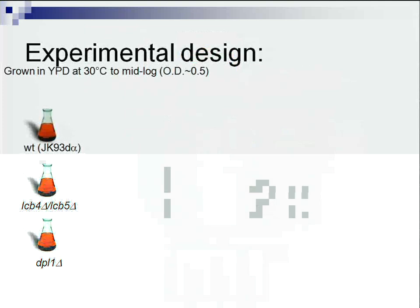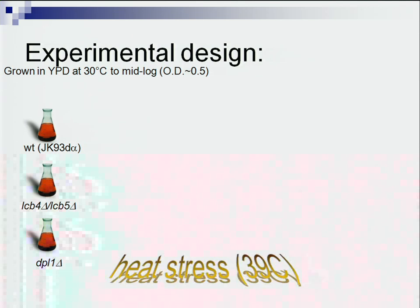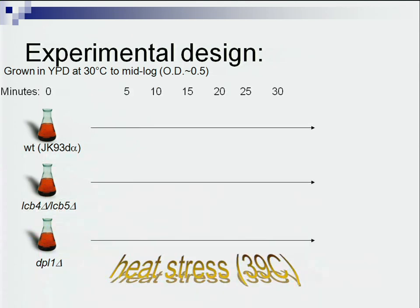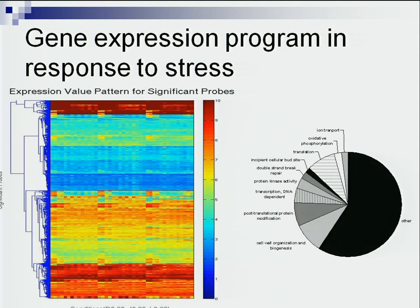We have parental cells and cells with the LCB4/5 knockout, which prevents the production of phyto-S1P, and the DPL1 knockout to prevent the degradation of phyto-S1P. Then we subject the cells to heat stress and collect a time series of both microarray and lipidomic data. When the cells are subjected to stress, over 1,000 gene expression changes occur, and this change can be compared across the LCB4/5 knockout strains.